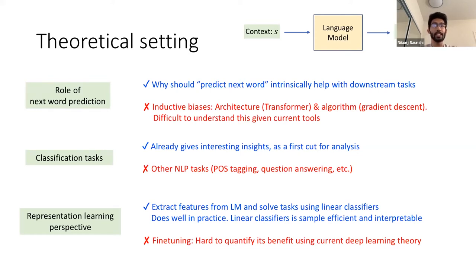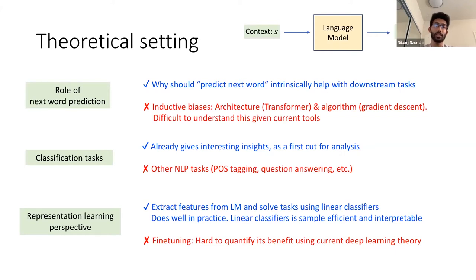Additionally, learning just the linear classifier on top of the features provides nice properties like sample efficiency, because it just depends on the dimensionality of the representation, and also some sense of interpretability. Finding these features for a downstream task does indeed help. However, just like the inductive biases, it's hard to quantify the benefits of this using current tools of deep learning.